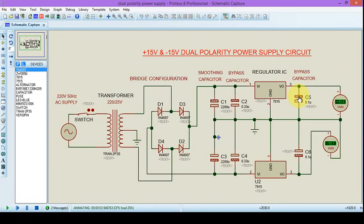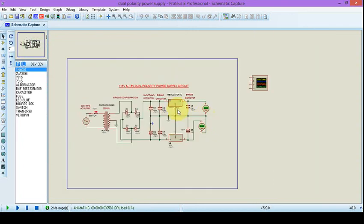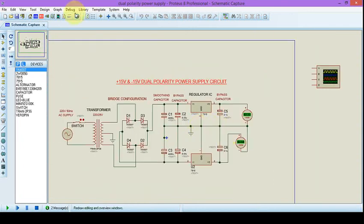And there you can see, hooray! We get plus 15 volts here and minus 15 volts here with respect to this middle line. So this is how you achieve dual polarity power supply circuit.